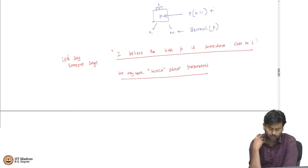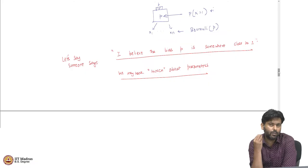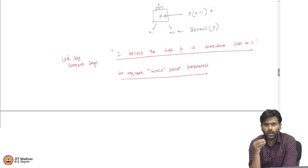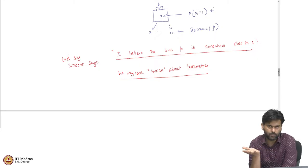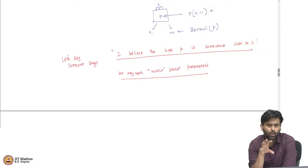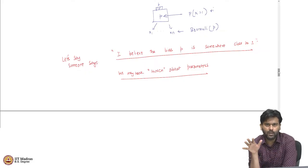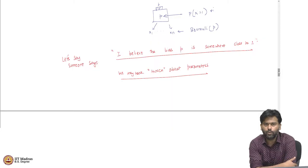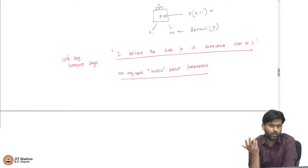It would be very good if we had a principled way to incorporate our hunch into our estimation process. Is there a way to somehow codify our hunch into mathematically more precise mechanisms that can be incorporated into our estimation procedure itself? If so, how can we do this? This is what we are going to see next.